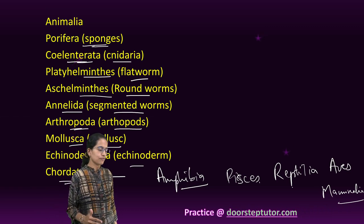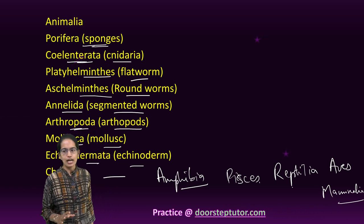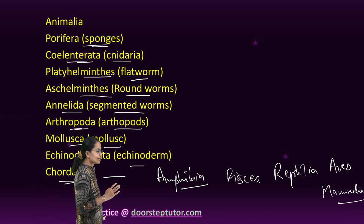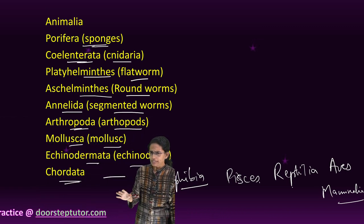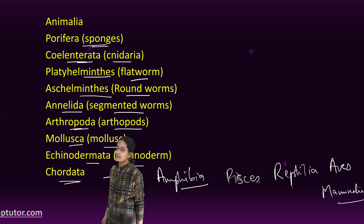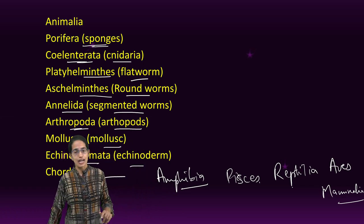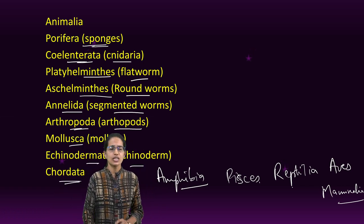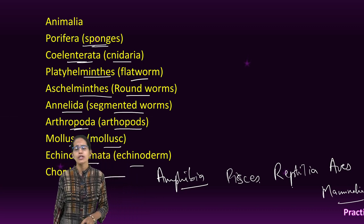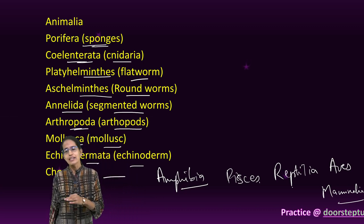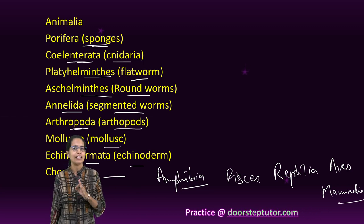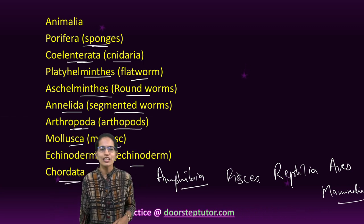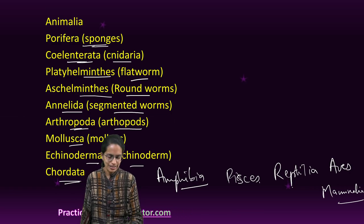So that's a basic classification recap covering the fundamental nomenclature of the five kingdoms. This is a summary class, but definitely practice questions on plant classification, animal classification, and five kingdom classification — it is an extremely important and scoring topic. If you know it well, you can attempt and get a hundred percent. Follow the links below for more practice. Good luck!